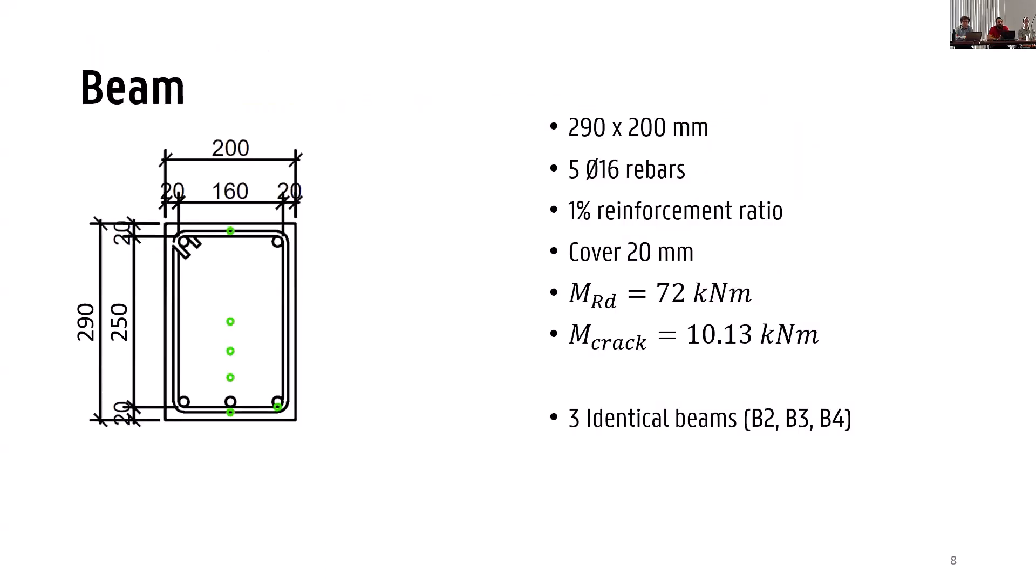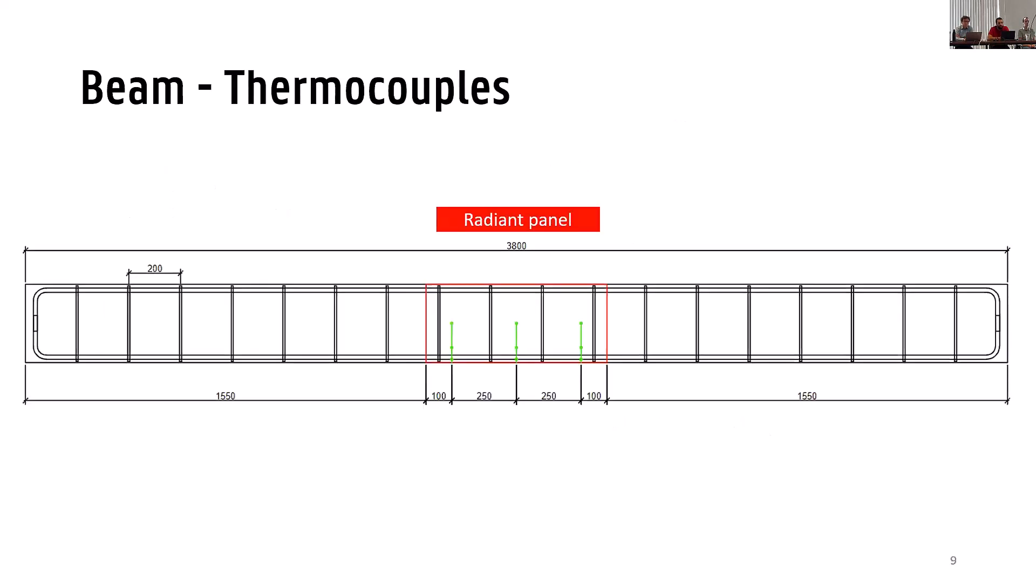And also you can see a lot of cables for thermocouples. We measured the temperature at six different points in the cross-section, so at the bottom or tensioned fire exposed side here. We measured the reinforcement temperature and temperature inside the concrete at five different places and also we did that at three different positions in the heated zone so we can have a much better idea about the distribution of the temperatures.